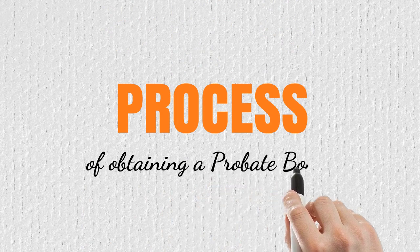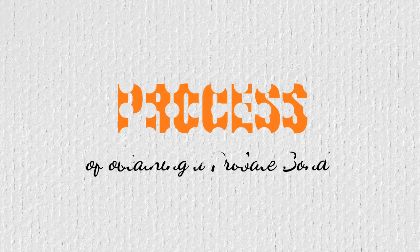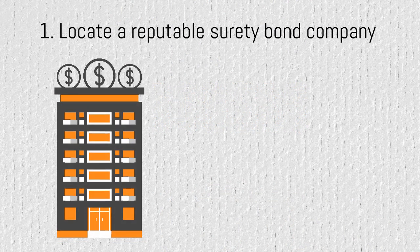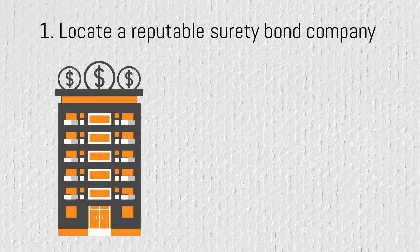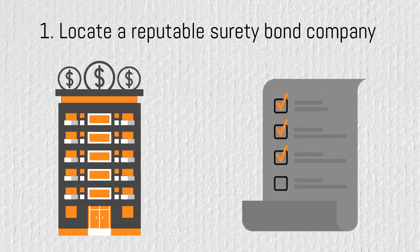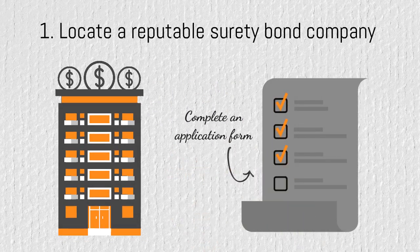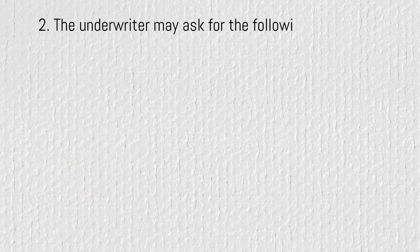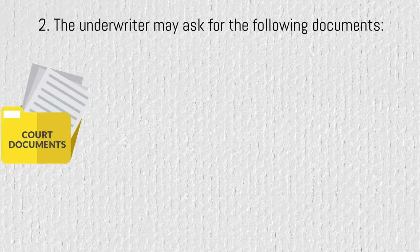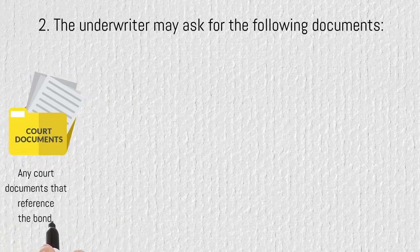What is the process to obtain a probate bond? Locate a reputable surety bond company. Usually, the surety bond company will have you complete an application. The application will be forwarded to an underwriter for evaluation. The underwriter may ask for the following documents: any court documents that reference the bond.